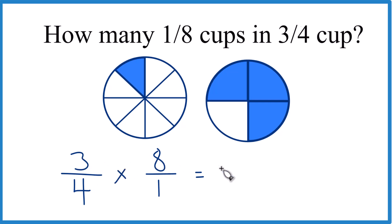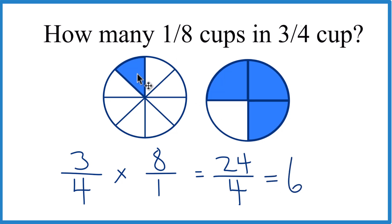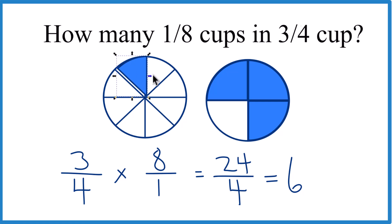3 times 8 equals 24, and then 4 times 1 is 4. And 24 divided by 4 is just 6. So we can say that 6 of these 1/8 cup pieces go into a 3/4 cup. That's it.